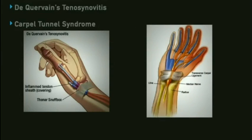De Quervain's tenosynovitis and carpal tunnel syndrome are common conditions of the wrist that may require intra-articular injections.